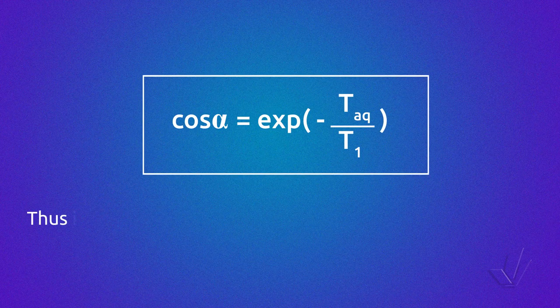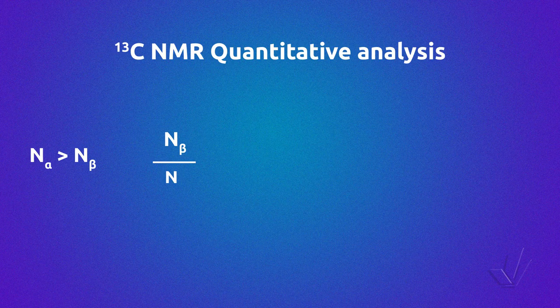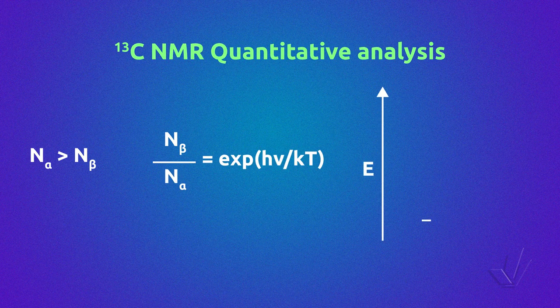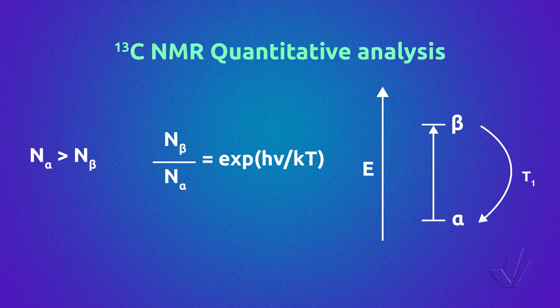Once the best acquisition time is chosen, it is possible to select the pulse angle for a given relaxation time using the Ernst equation. For example, for an acquisition time of 0.8 seconds and a relaxation time of 1.5 seconds, the pulse angle should be 70 degrees. If a quantitative spectrum is also required, other parameters must be considered. One reason carbon-13 NMR is not quantitative is that relaxation times are quite long — carbon spin nuclei take more time than proton spins to achieve equilibrium given by the Boltzmann distribution. If a second pulse is given before the nuclei achieve equilibrium, the spectrum is not quantitative.